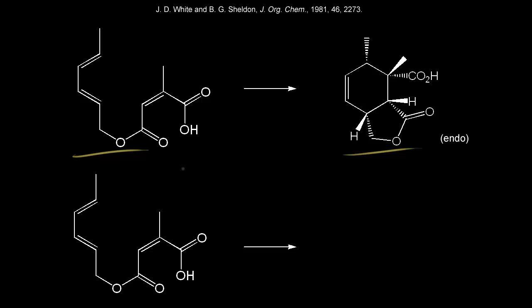The first thing we need to do is find our diene and our dienophile. Our diene is over here on the left, so let me highlight the pi electrons. These pi electrons in red are part of the diene, and so are these pi electrons in magenta. Our dienophile is over here on the right — these pi electrons, let me make them blue — these pi electrons are part of our dienophile.